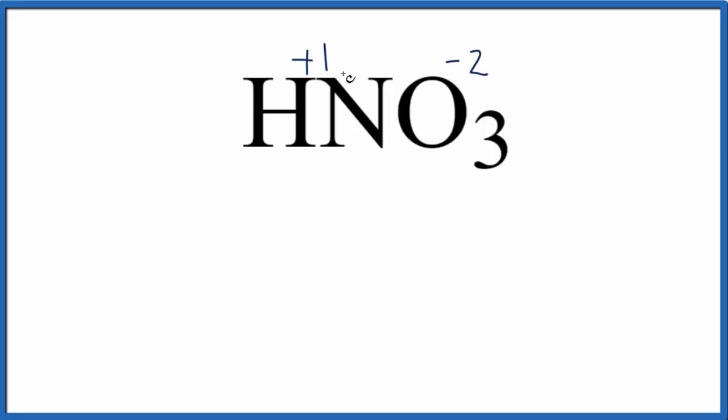To balance that minus 5 out to give me a total number of zero, this has to be plus 5. So when I add up the oxidation numbers on all of the atoms here, I'll get zero. So that means the oxidation number on the N in HNO3 is plus 5.